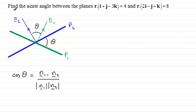Now in this example then, we've got to find the acute angle between the planes R dotted with i plus j minus 3k equaling 4 and R dotted with 2i minus j plus k equaling 8.